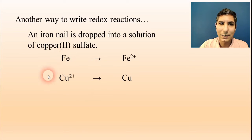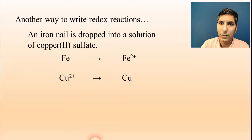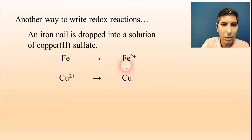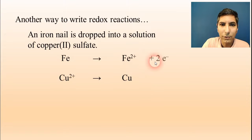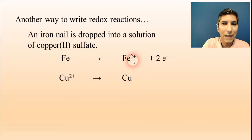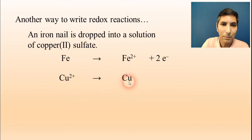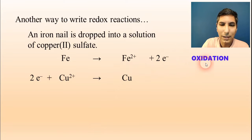Now we balance these half reactions in terms of charge. On the first one, we have a charge of zero on the left with iron and a charge of +2 with the iron ion, so we put two electrons on the right to balance it out. For the second half reaction, we have +2 on the left and zero on the right, so we put two electrons on the left. Iron is losing electrons, so that's oxidation. Copper is gaining electrons, so that's reduction.